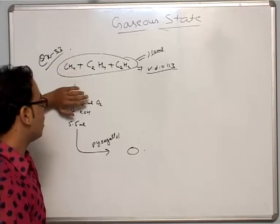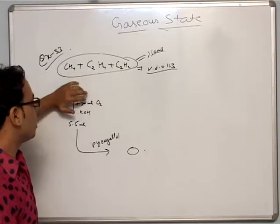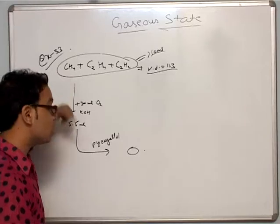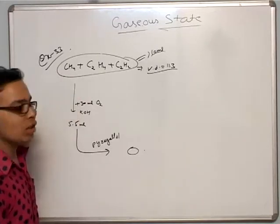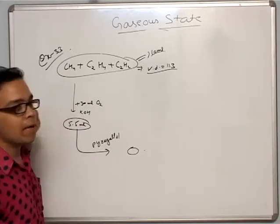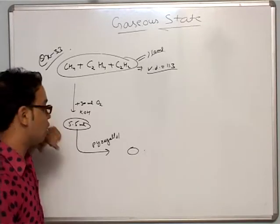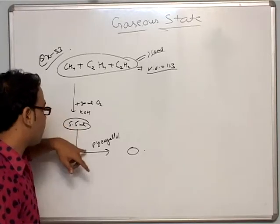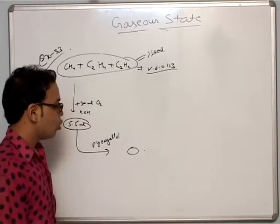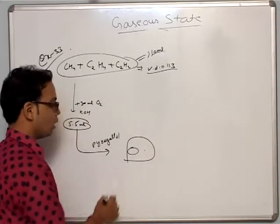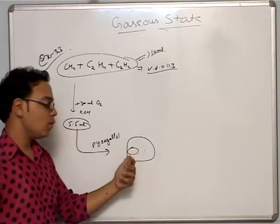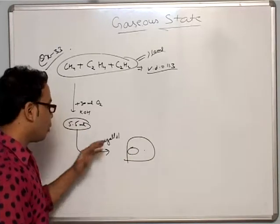We add 30 ml of oxygen to this mixture and pass the resultant mixture through KOH. We will get 5.5 ml as the resultant mixture. Now when this 5.5 ml mixture is passed through Pyrogallol solution, we get NULL — that is, all of the mixture was absorbed here.